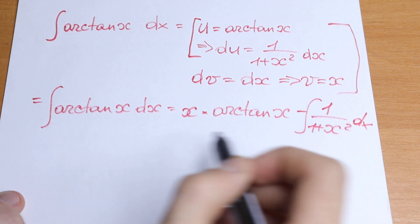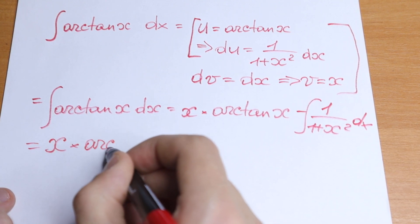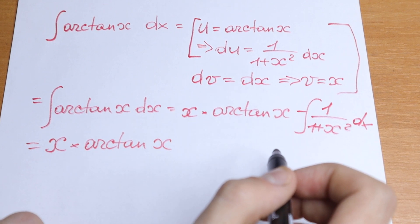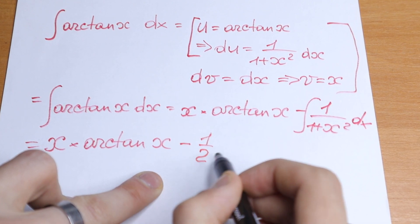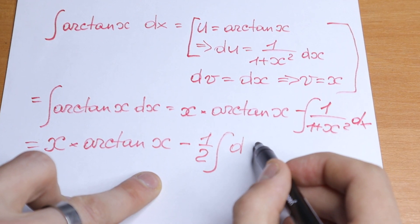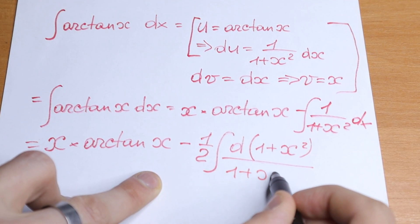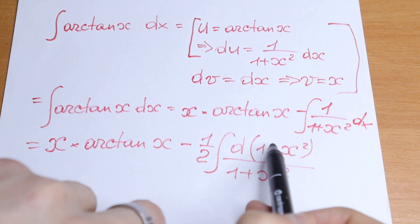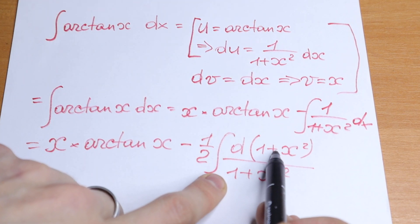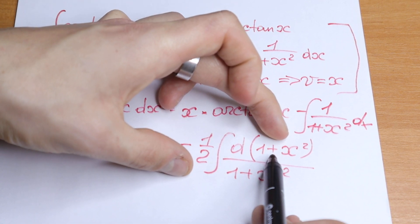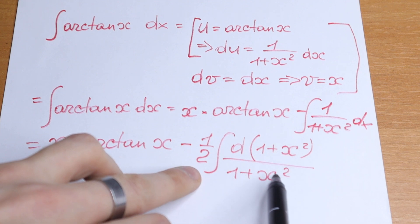Let me show you a really good method to solve this remaining integral. We write x times arctan(x) minus one half times the integral of d(1 + x²) divided by (1 + x²). I put (1 + x²) inside the differential. If we find the derivative of (1 + x²) we get 2x, and dividing by the 2 I wrote in front, these twos cancel, so nothing changes — it is exactly the same expression.